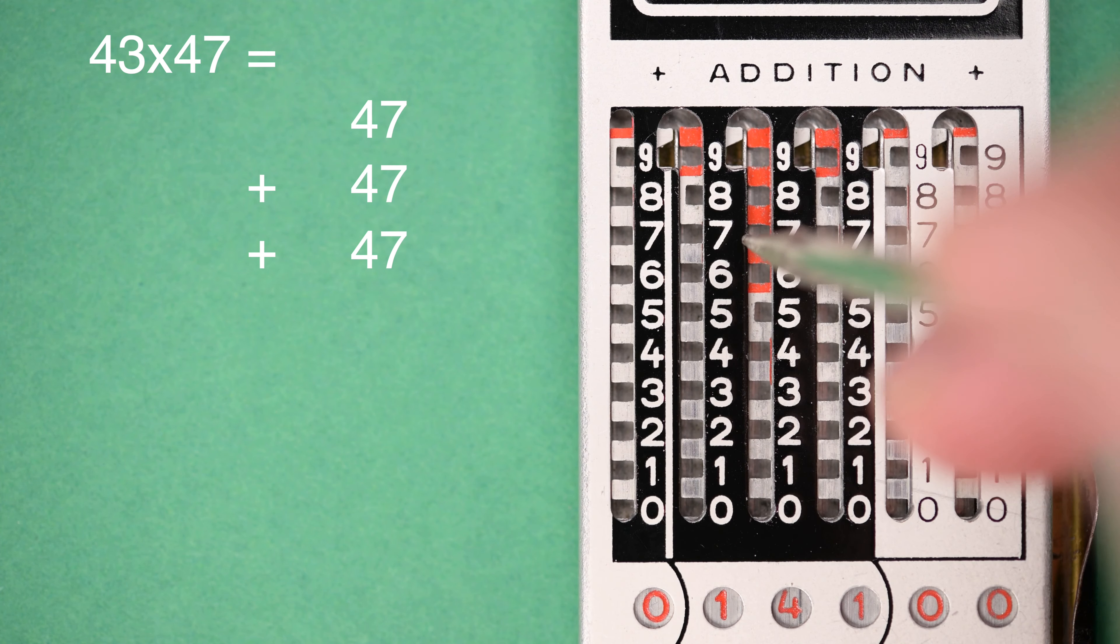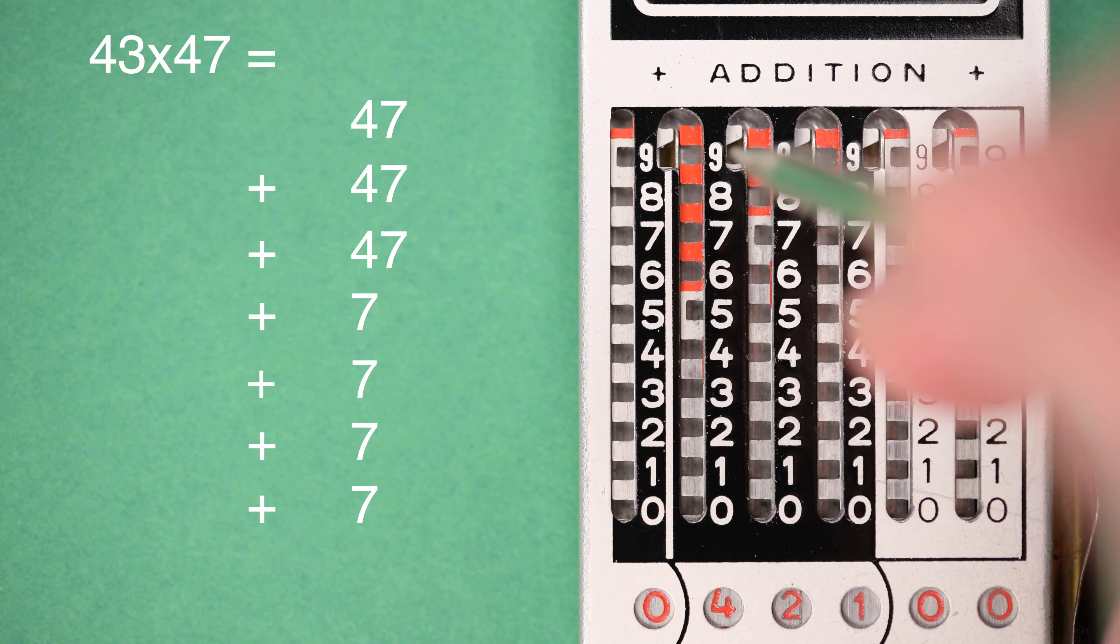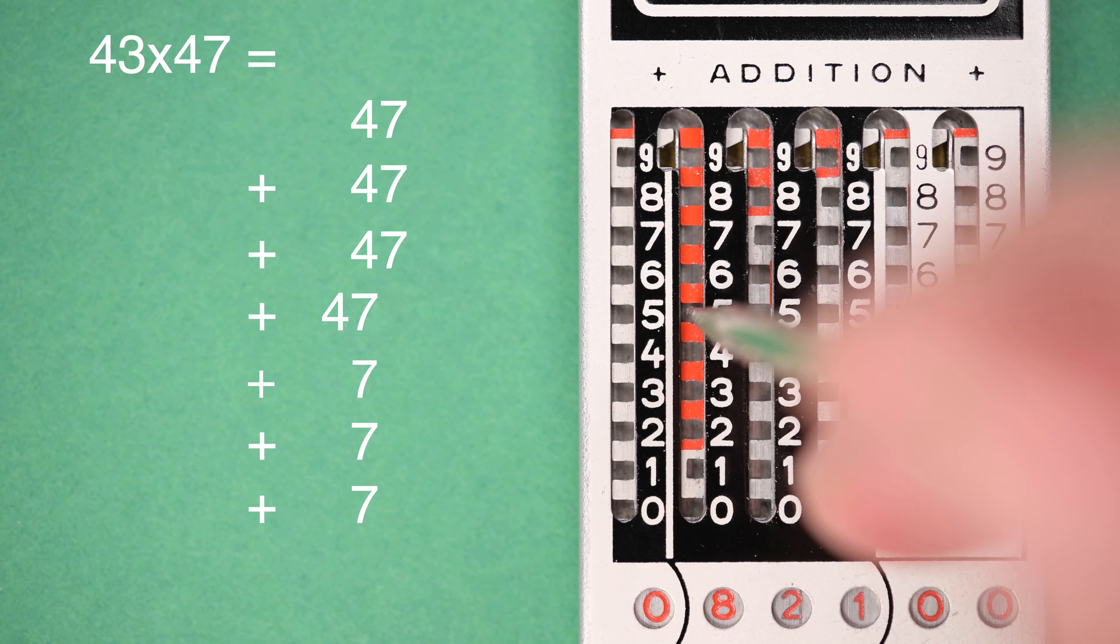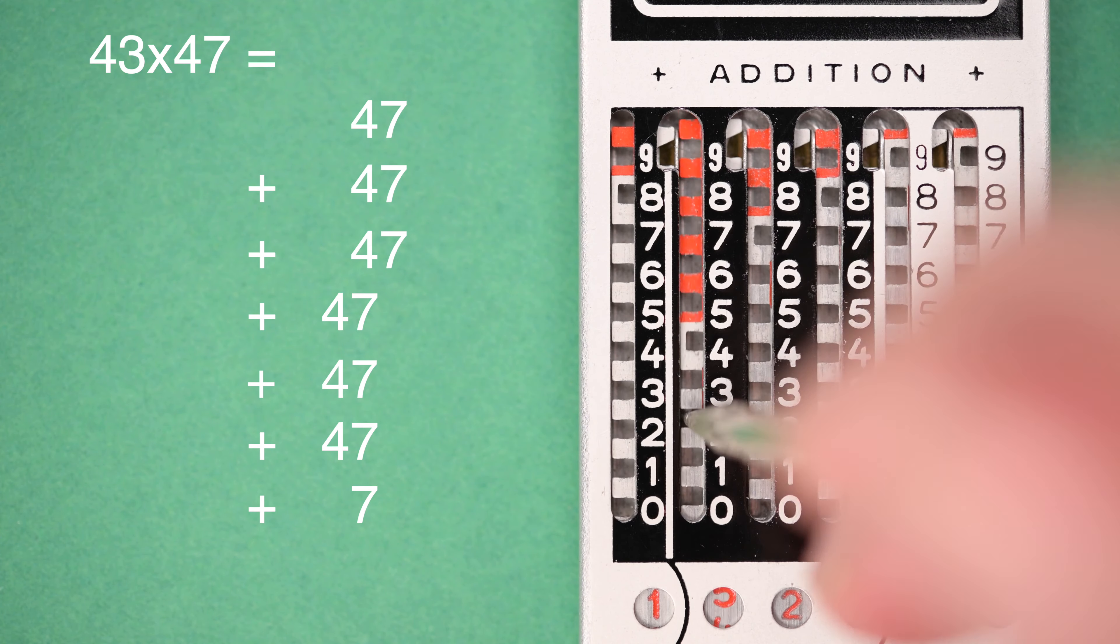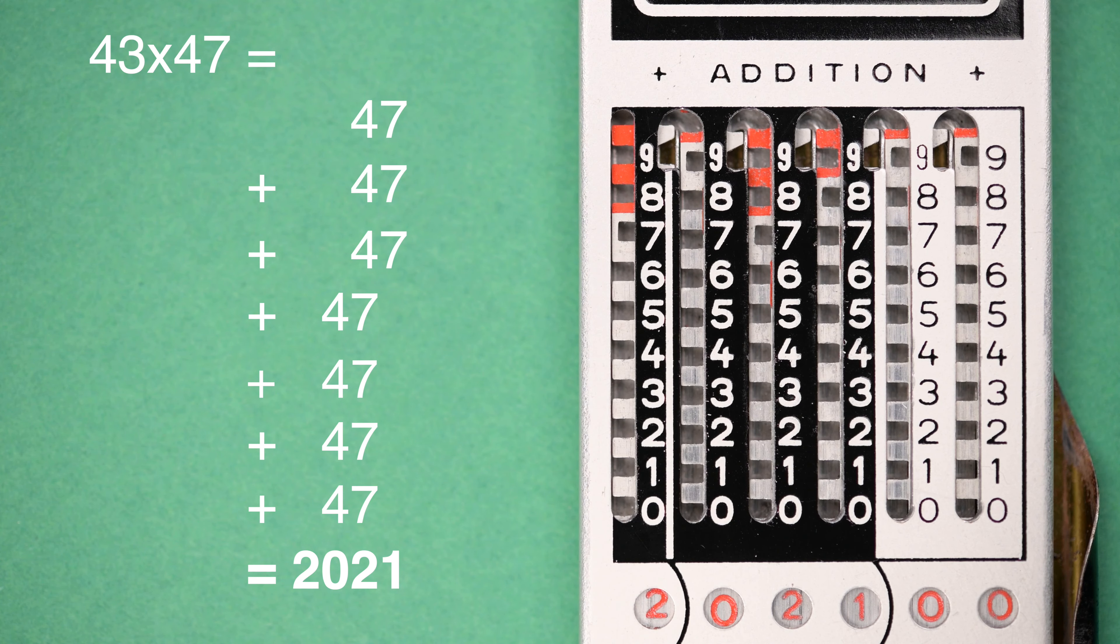And then we use the same trick one position over to multiply 47 by 40. So that's now 4 times 7 on the tens, 4 times 4 on the tens, and then 4 times 4 on the hundreds. And voila, 43 times 47.